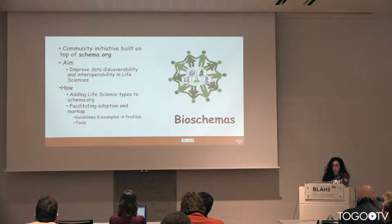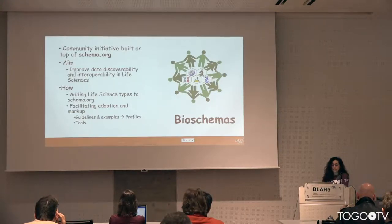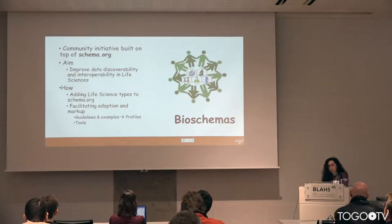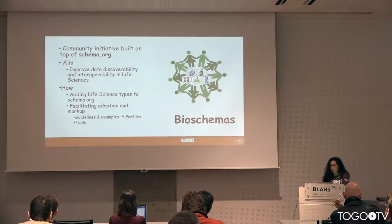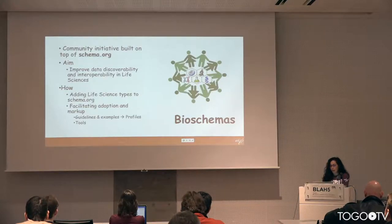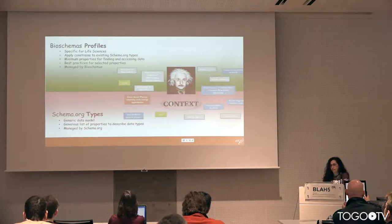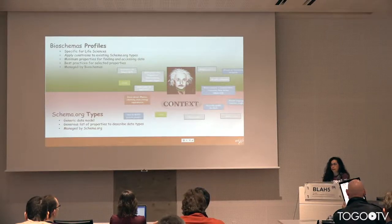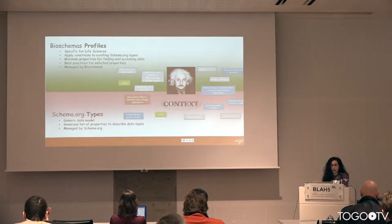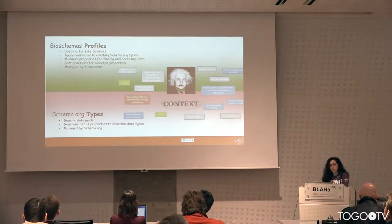BioSchemas is a community initiative built on top of schema.org. We have two main ideas: the first is to add types related to life sciences directly to schema.org — types such as protein or gene — and we are also building what we call BioSchemas profiles. A profile is a guideline on how to use the types already provided by schema.org. If you go to schema.org and see how to model a dataset or a book, you can have more than 100 properties, and using 104 properties is something nobody will do. The idea with BioSchemas profiles is to take into account the context where the types will be used and then tailor them.